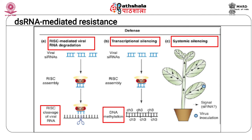Viral resistance due to gene silencing is known to spread systemically by movement of the siRNAs through the vascular system of the plant. Some plant viruses, however, are known to produce silencing suppressors, which leads to an abolishment of resistance.